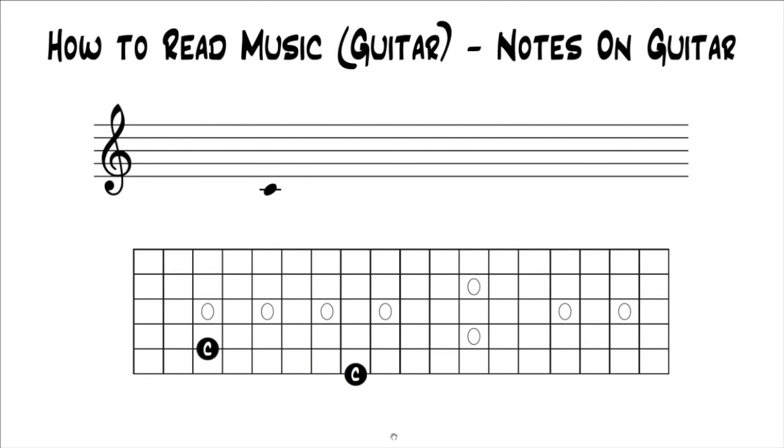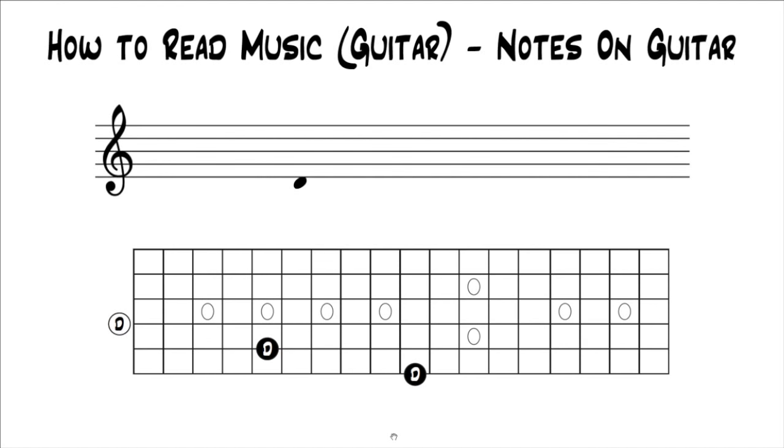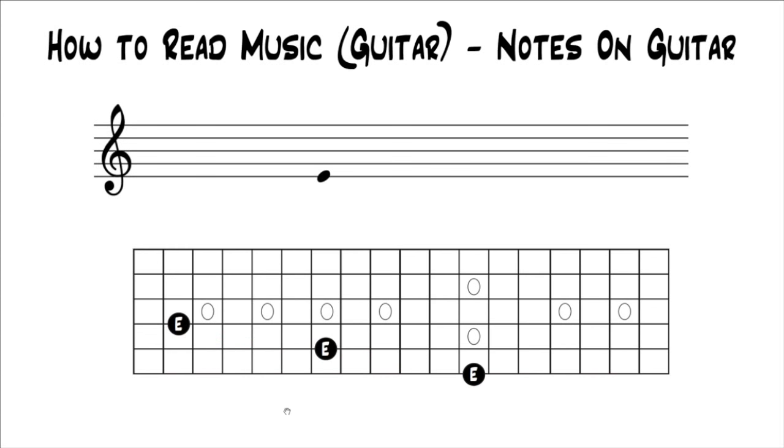So after B, we have C. Again, you have two unison options. After C, we have D. This time you have three unison options. All three of these D's are the same pitch. So if you see this D written out, you have three different places you can play it. Go up again, we're on E. Again, you have three different places because there's three unison notes. Go up again, we're on F. Again, you have three unison notes. Go up again, you're on G. This time you have four unison notes. So now you have four options to be able to play this note.